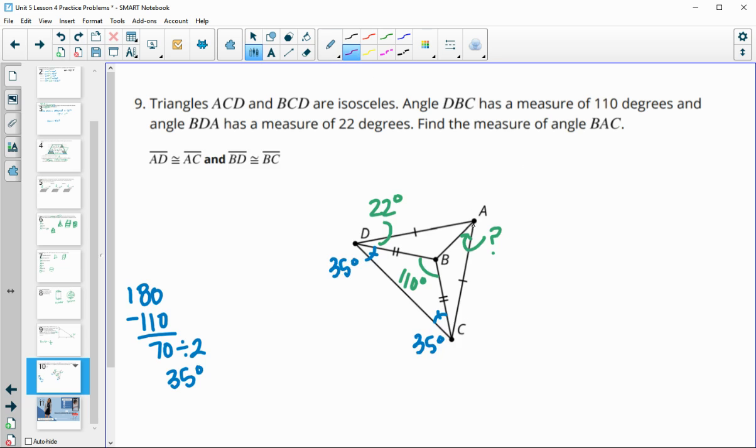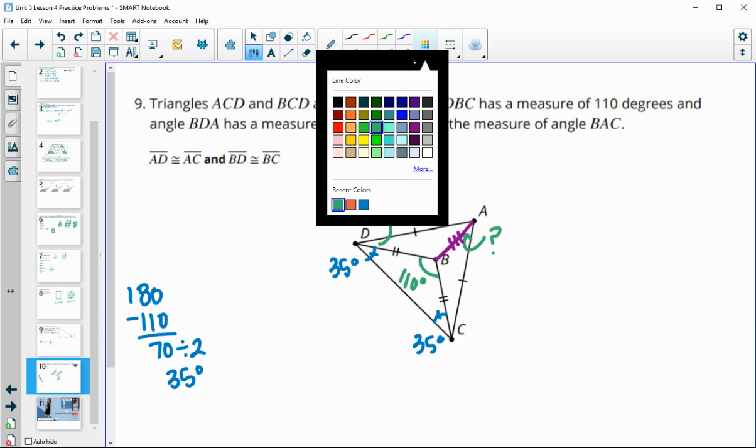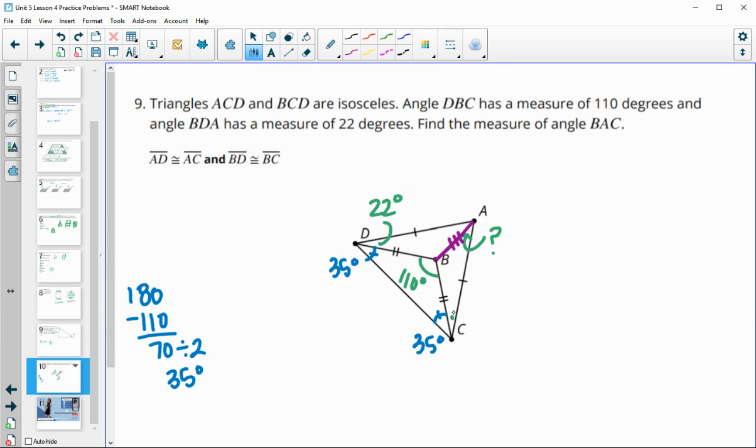We also see this segment AB is in both of these two triangles over here. That would mean that these two triangles are congruent by side, side, side. So we know that each of these two triangles are congruent. So we would know that this angle here is actually also 22 degrees. Because that's in the similar spot here.